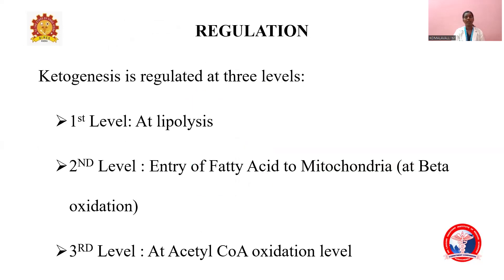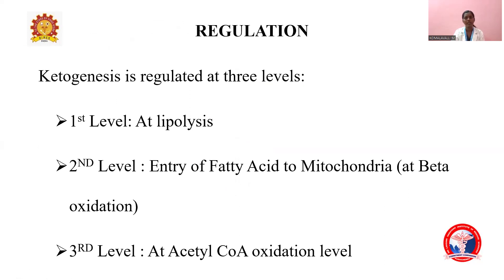Ketogenesis is regulated at three levels: first at the level of lipolysis, second at the level of beta-oxidation, and third at the level of acetyl-CoA oxidation.